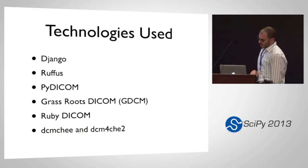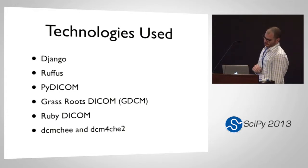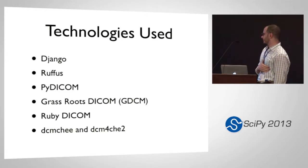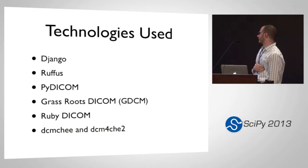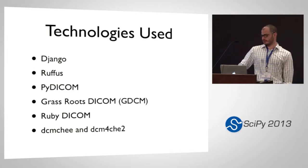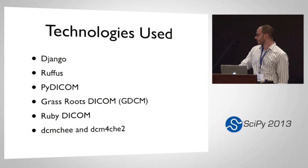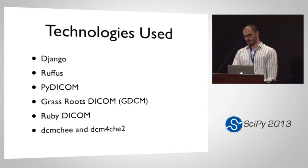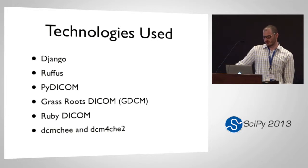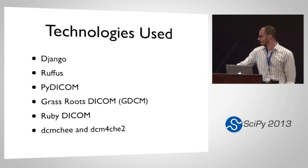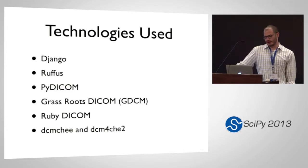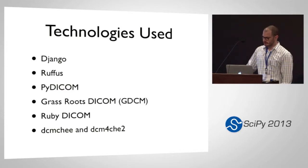We also use Ruby DICOM. The actual anonymization right now calls out to a Ruby script, because when I first started doing this, the best anonymizer I could find was in Ruby. The library is great, but it does make this more complicated. So I have a branch out there that is removing all the dependencies on that.